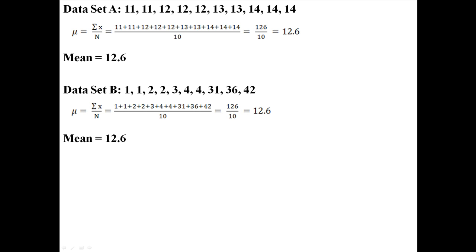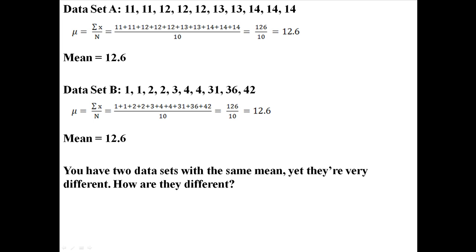Now imagine you have a data set like this. The numbers are kind of spread out. It starts off low, 1, 1, 2, and then goes all the way up to 31, 36, 42. When we add those all together and divide by how many we have, we also get 12.6. So you have two data sets here with the same mean even though the data sets look very different. How are they different? Basically how could we describe that difference?